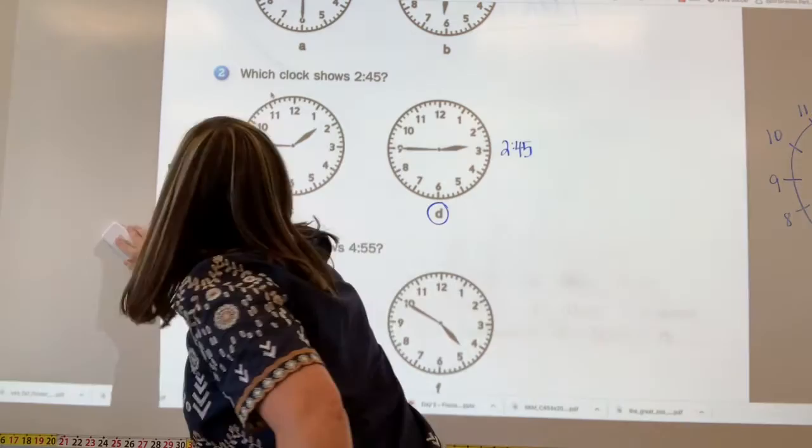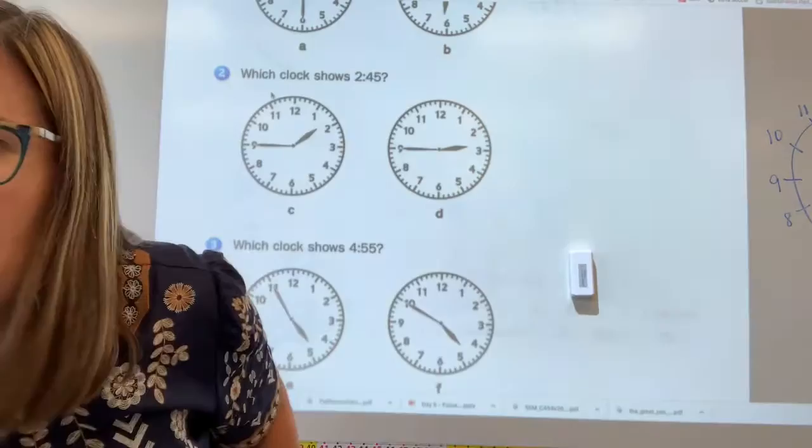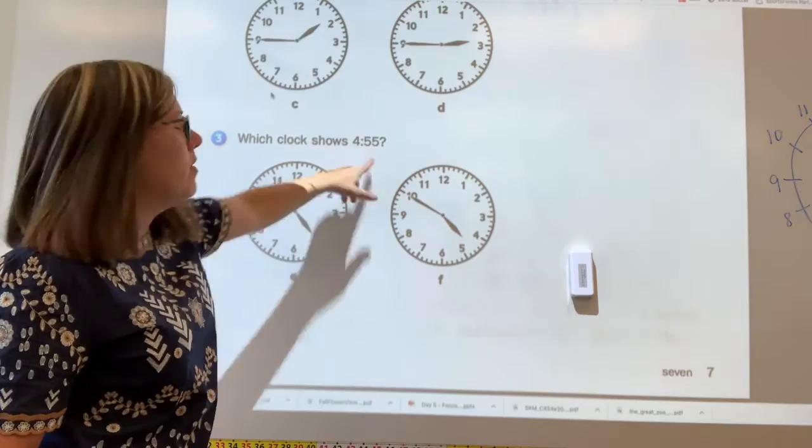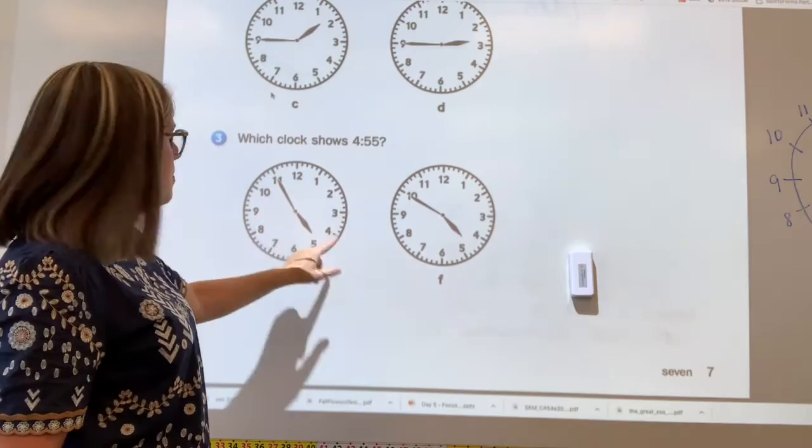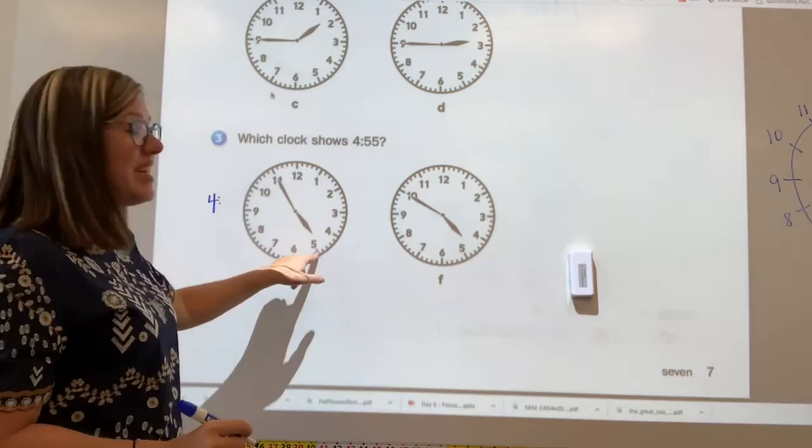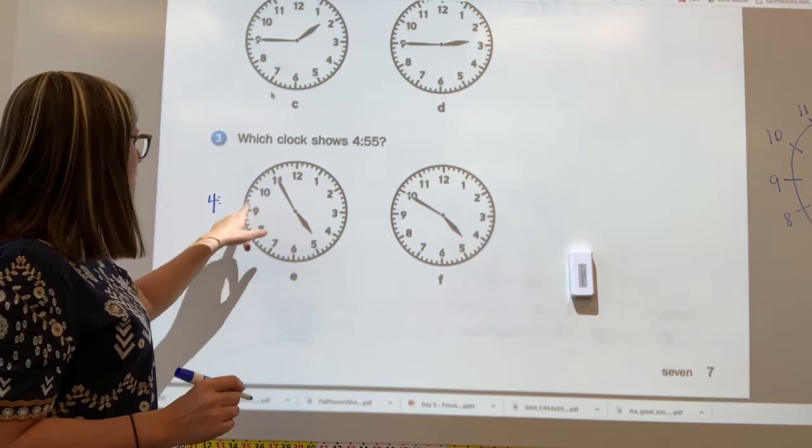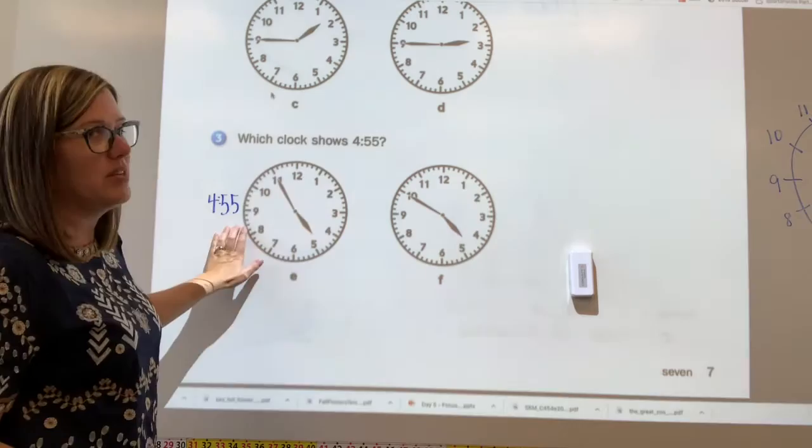We have one more to do together. The last one. This says, which clock shows 455. So let's find out the times for all these clocks. That says 455. So when I look at this, the hour hand, my short hand is between the four and the five. So I know that's four still because it's not at the five yet. And then if I count my minutes, I know when I get to the 60, that's 30, 35, 40, 45, 50, 55. I think that clock says 455, but let's get this one just to be sure.